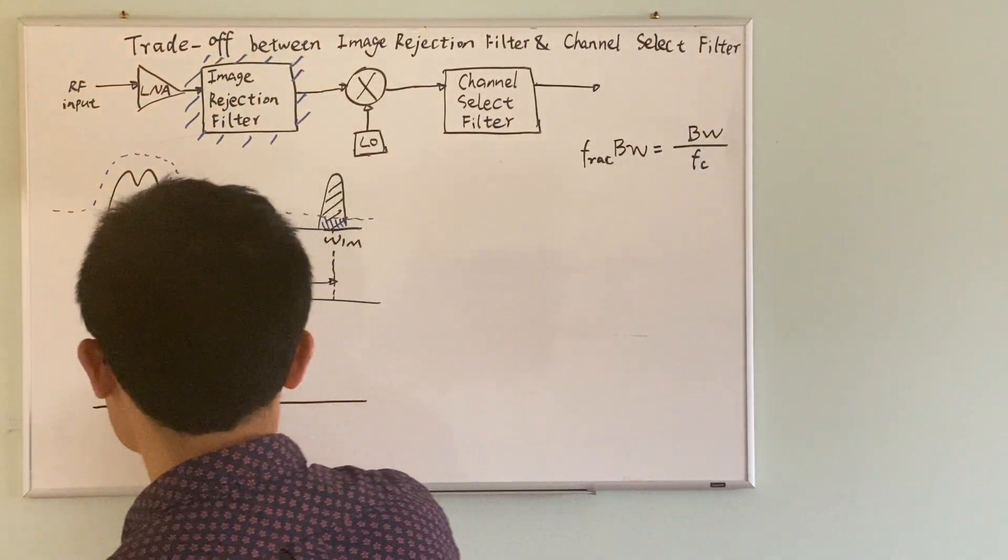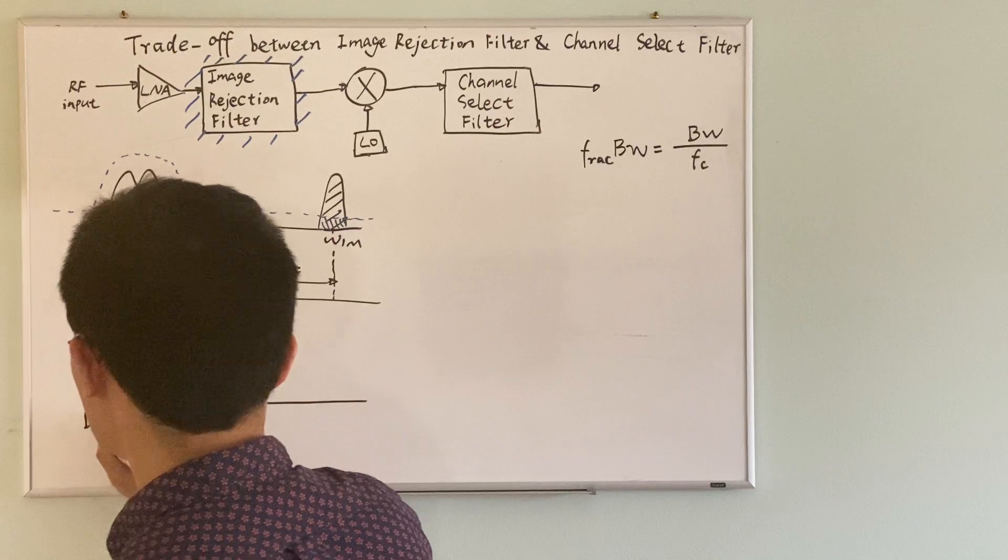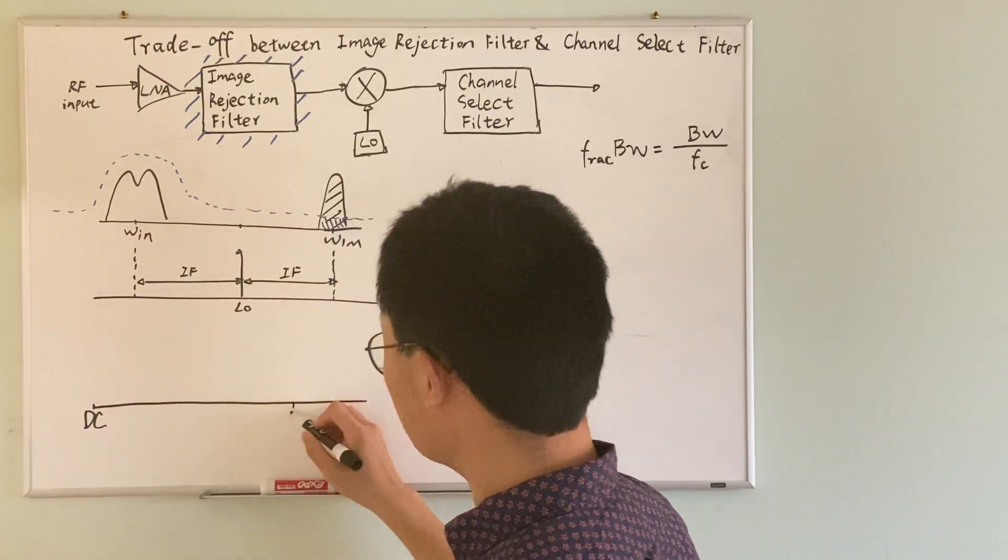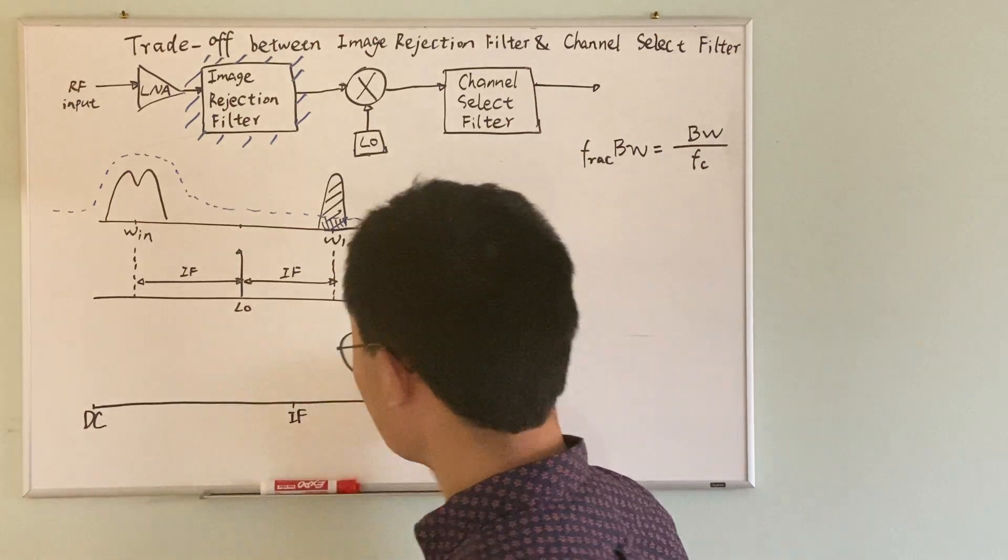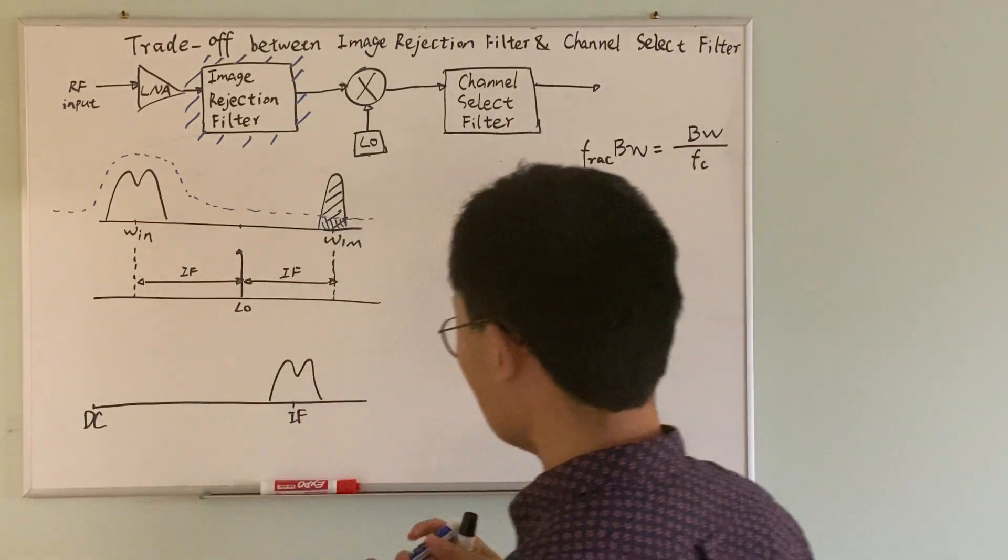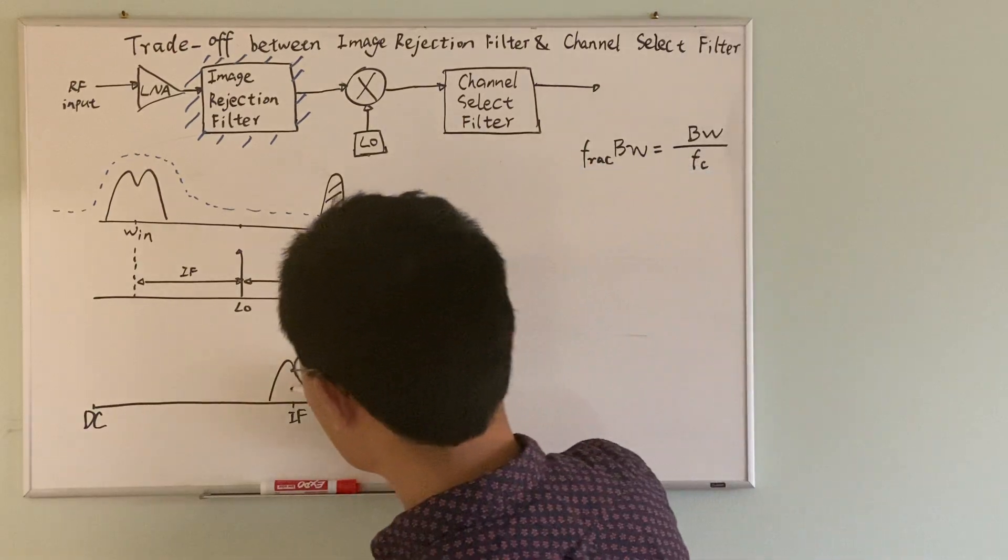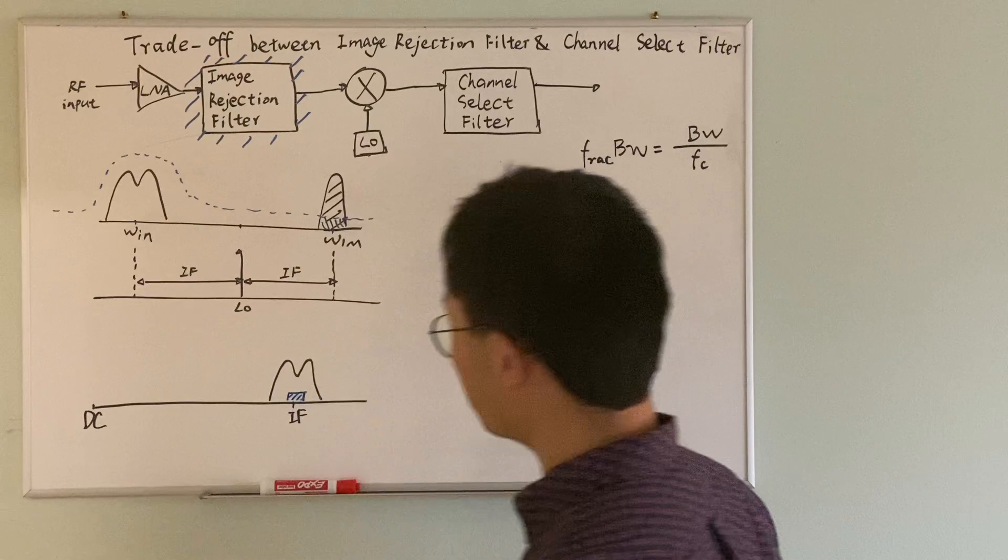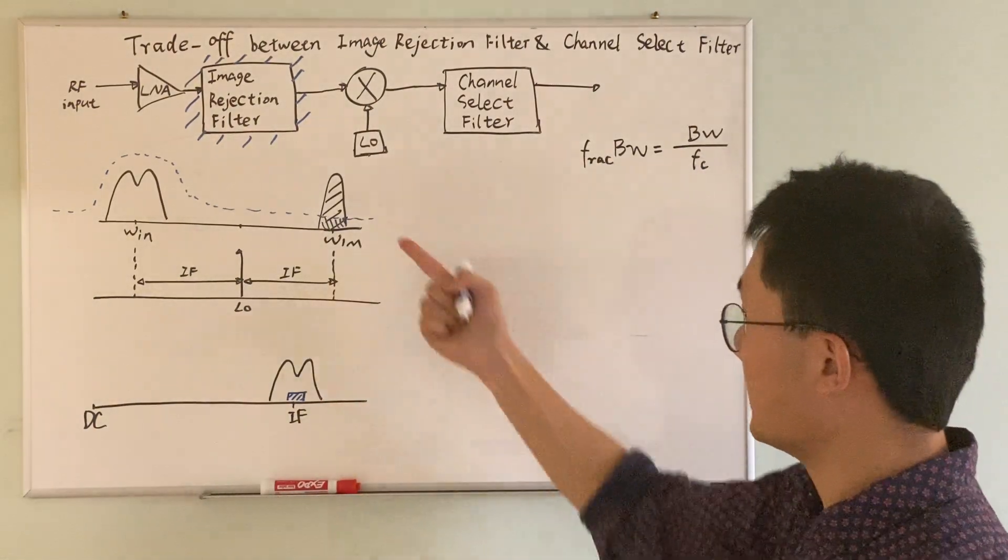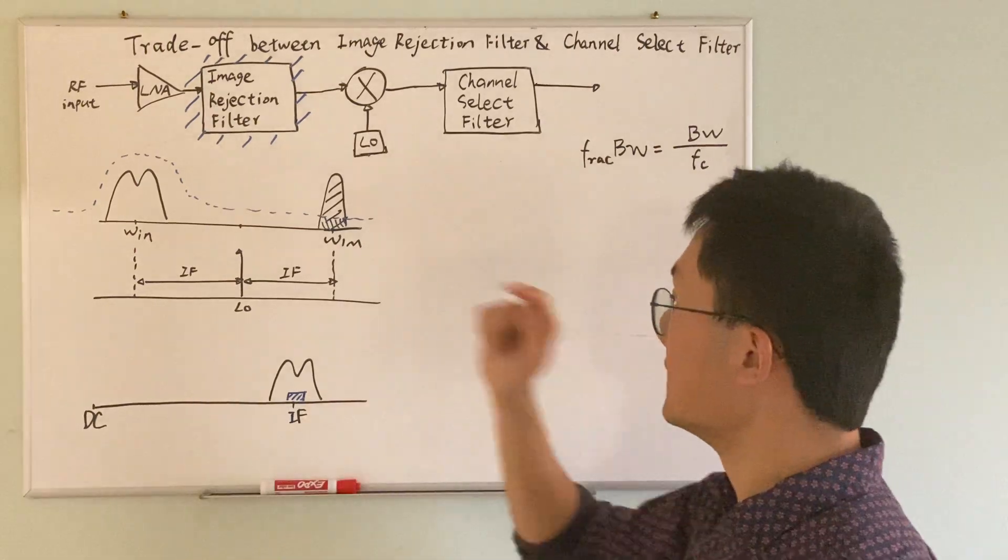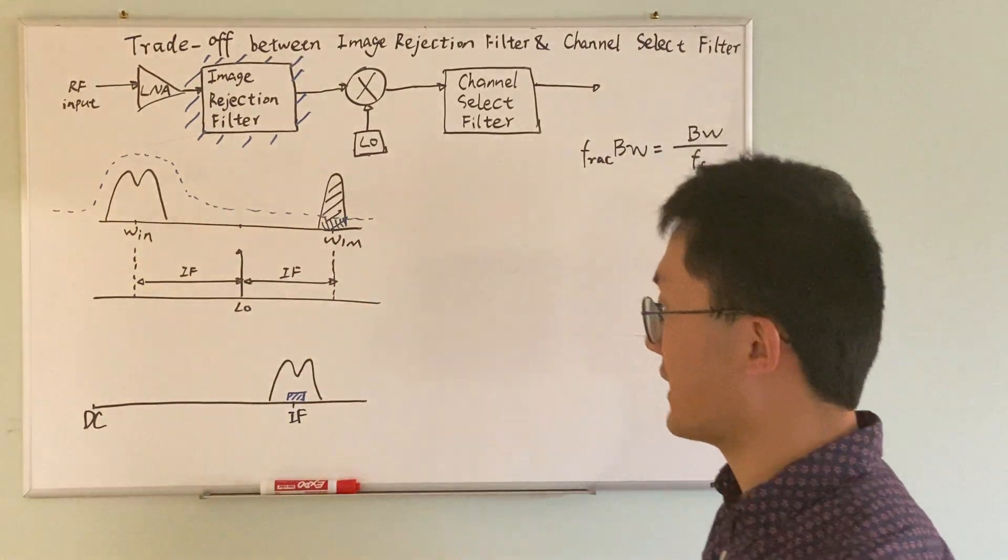So when we mix the two, this is the DC point and let's say this is the IF. The signal we got looks something like this. So as you can see, the image has been suppressed significantly while the input signal largely remains unchanged.